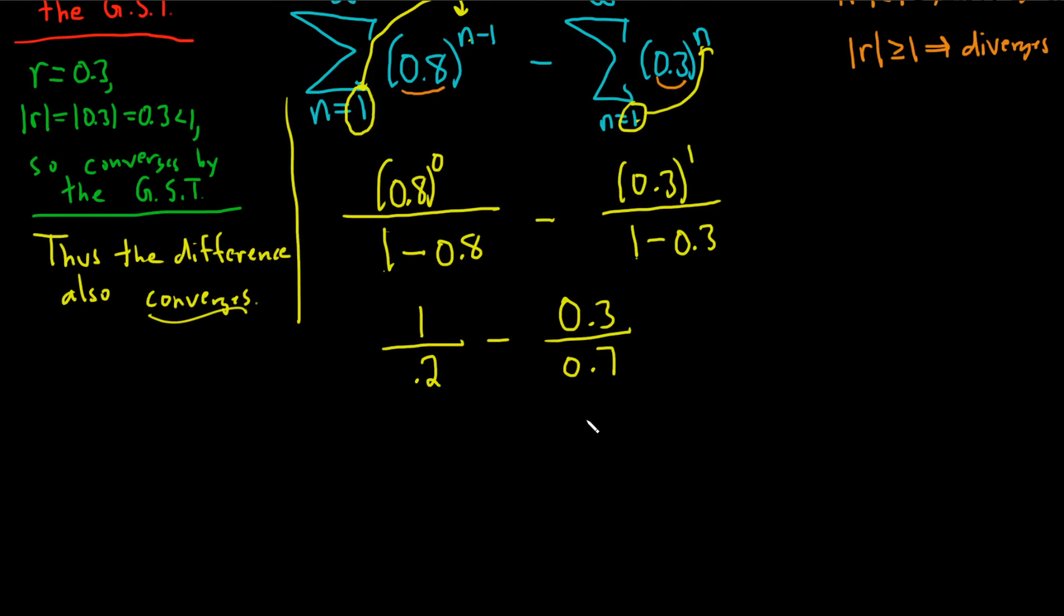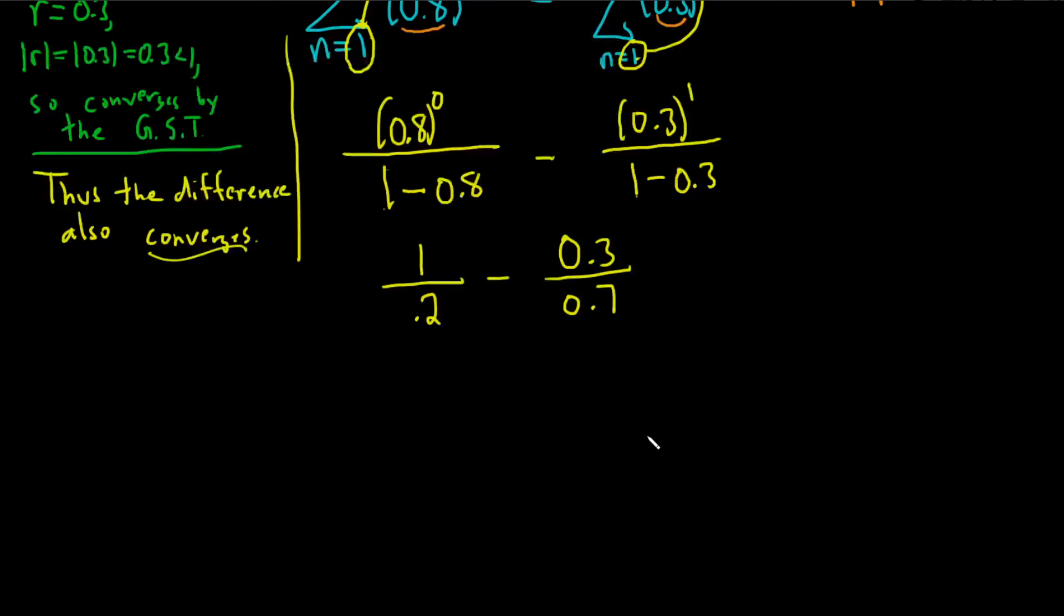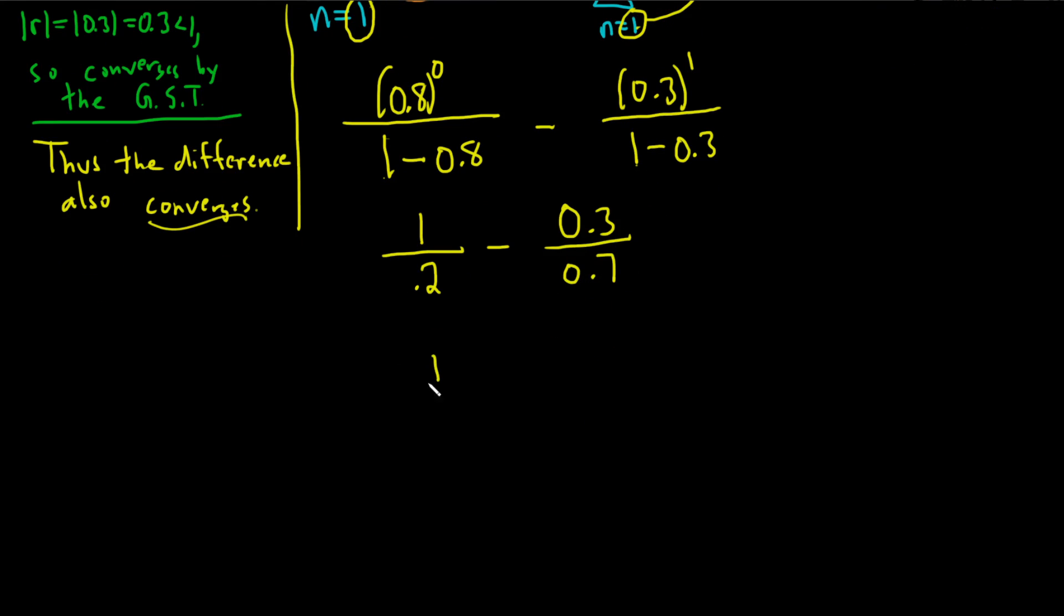We could do all this by hand, or we could use calculators. You know what? Let's do it by hand. This is 1 over 0.2 is really 2 tenths, because the 0.2 is in the tenths place. This is 1 over 2 tenths minus, this would be 3 tenths divided by 7 tenths.